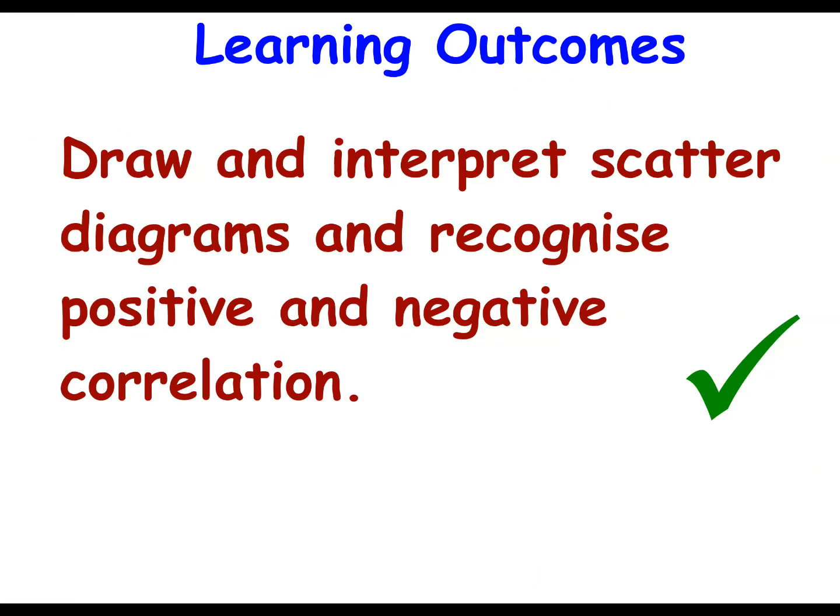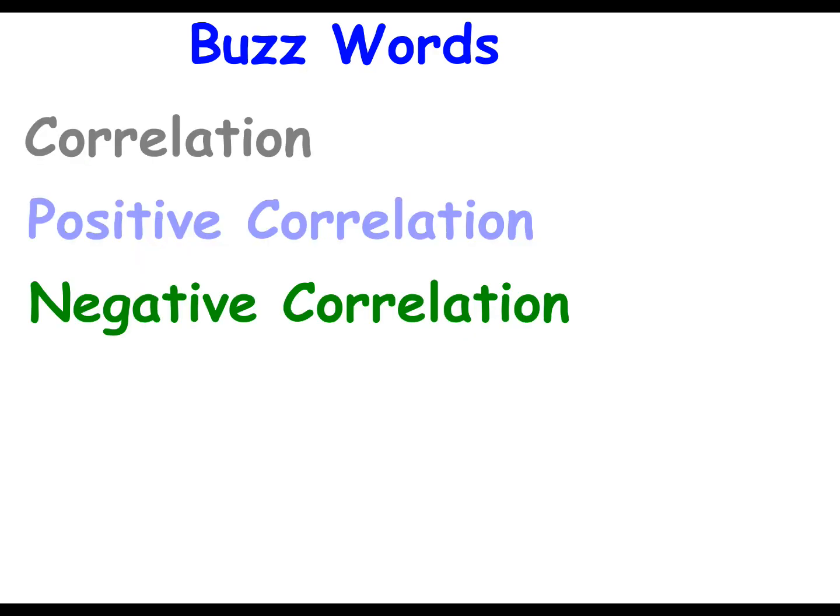And that completes our learning outcomes: to draw and interpret scatter diagrams and recognize positive and negative correlation. The buzzwords are correlation, which is either positive if it goes up in that direction, or negative in that direction. And don't forget your line of best fit that goes as close to as many of the points of data that you have.